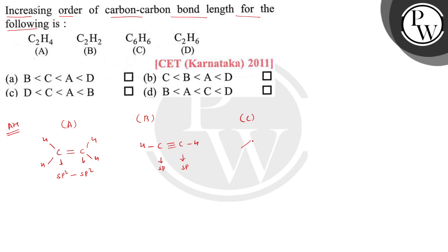In case of C, it is C6H6, that is benzene. That is the structure of benzene. Here also all the carbons are sp2, so the overlapping is sp2-sp2.